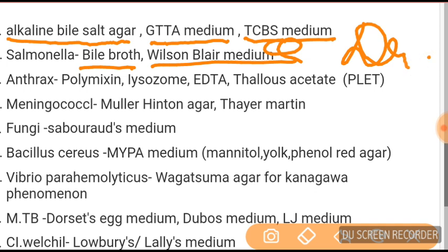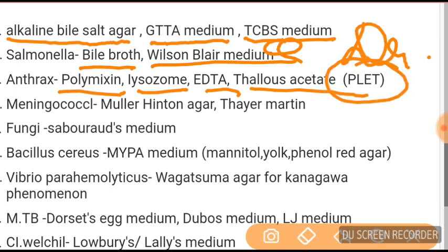For Anthrax — Bacillus anthracis — the PLET medium (Polymyxin, Lysozyme, EDTA, Thallous acetate) is used. For Meningococci, in meningococcal meningitis patients, we do plating on Thayer-Martin or Mueller-Hinton medium.